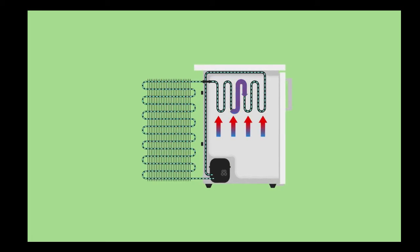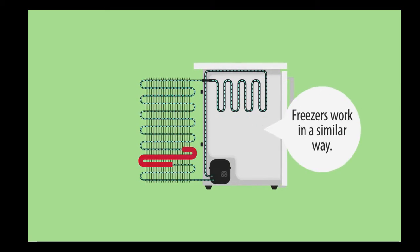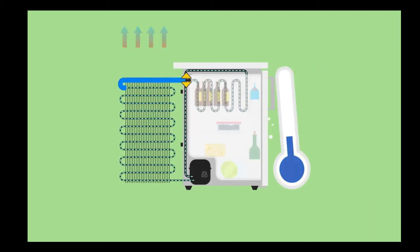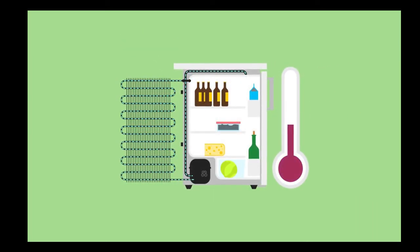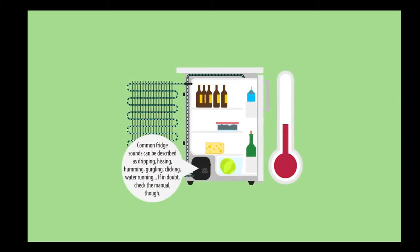It again picks up heat from inside the fridge and flows down to the compressor again. And so the cycle repeats. A thermometer inside the fridge measures the temperature and turns on the compressor when the temperature gets too high.